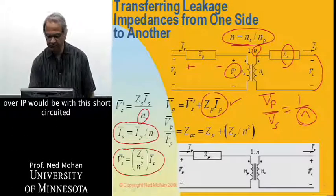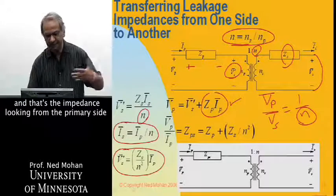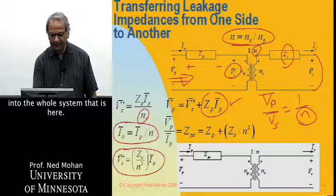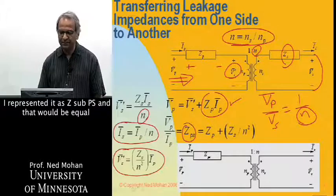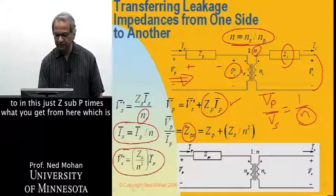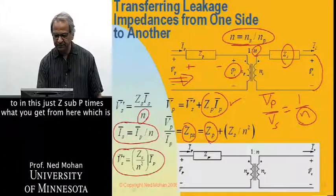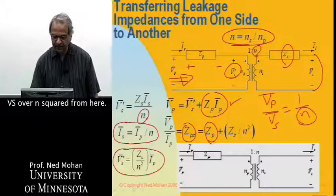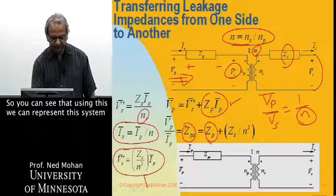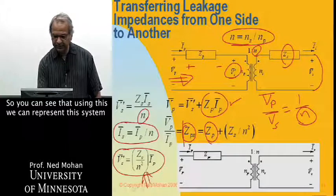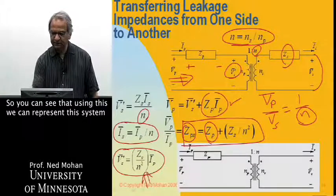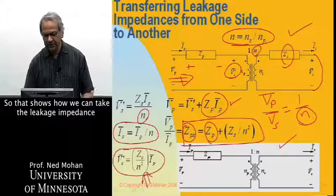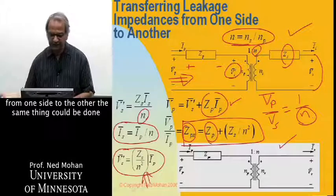And therefore, VP over IP with this short-circuited, and that's the impedance looking from the primary side into the whole system, that is here, I represented it as Z sub PS, and that will be equal to Z sub P plus what you get from here, which is ZS over N squared from here. So you can see that using this, we can represent this system by this simpler equivalent circuit here. So that shows how we can take the leakage impedance from one side to the other.